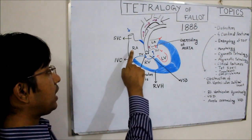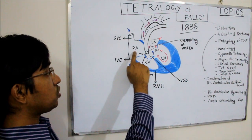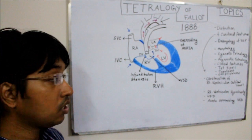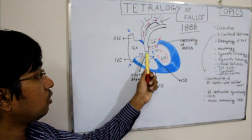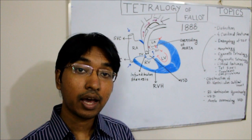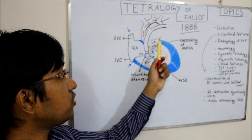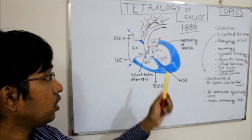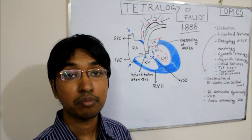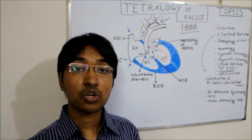From the right atrium, blood goes to the right ventricle via the tricuspid valve. In a normal heart, blood goes from the right ventricle via the pulmonary trunk to the lungs, where gaseous exchange occurs. Oxygen-rich blood then returns to the heart and enters the left atrium, then goes into the left ventricle via the mitral valve, and from the left ventricle, blood goes to the aorta to circulate throughout the body.